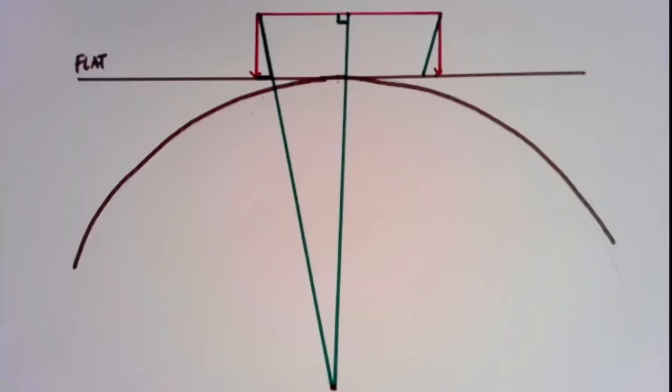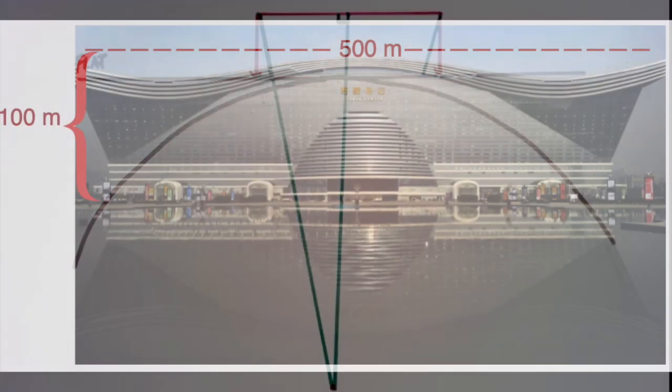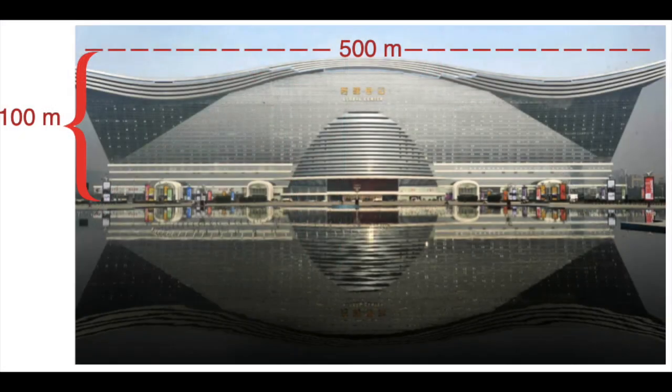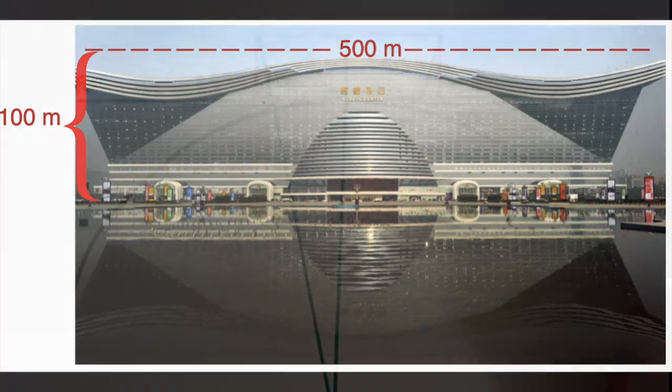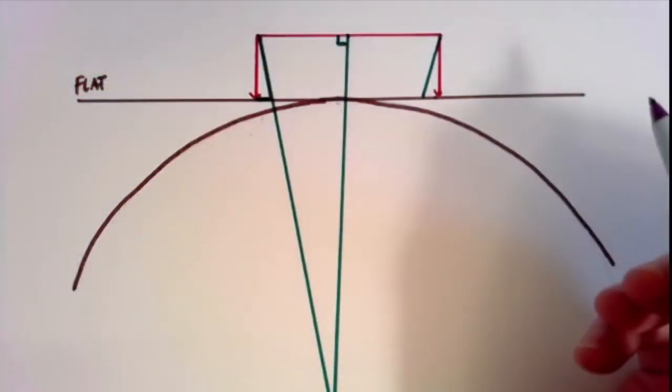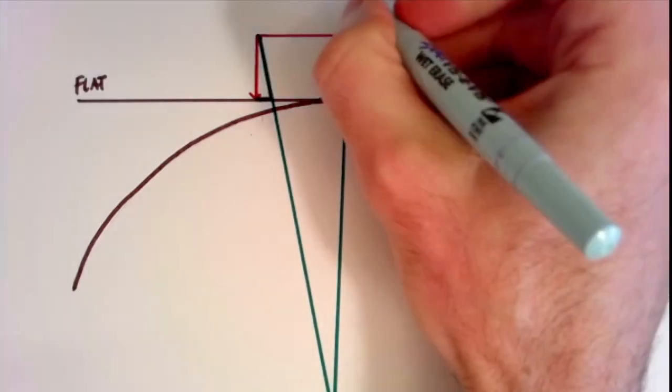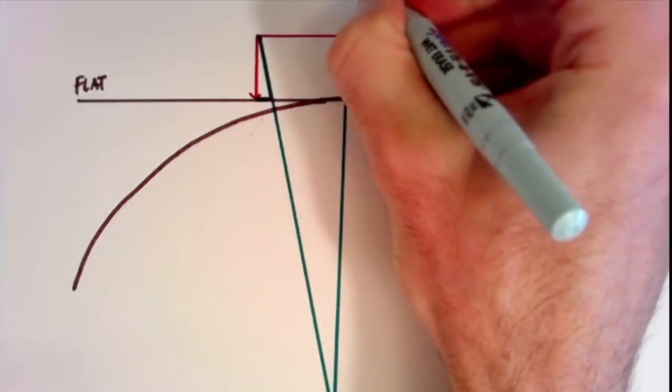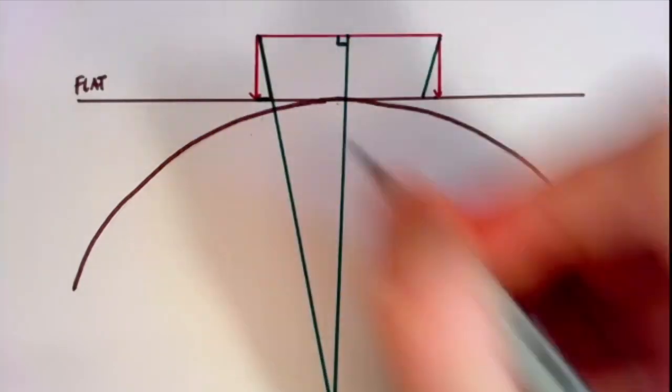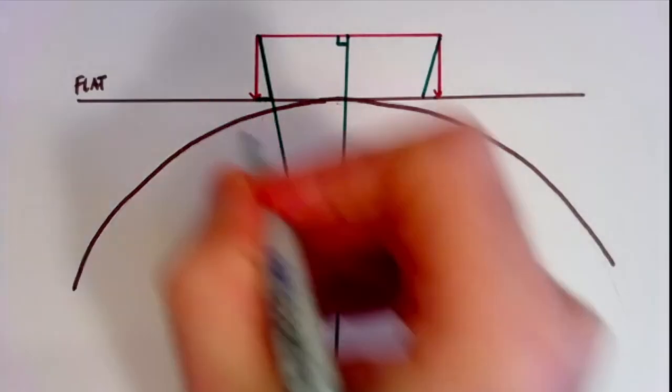So just for an example, we'll take the widest building in the world, which is the New Century Global Center in China. And this building is 500 meters across and 100 meters tall. And I'll do it in kilometers. So 500 meters across is half a kilometer. And 100 meters tall is a tenth of a kilometer.